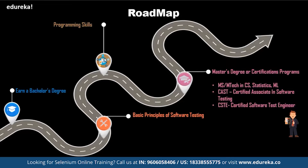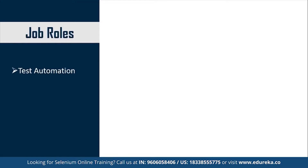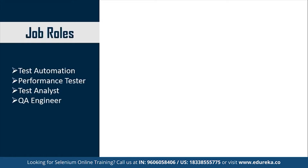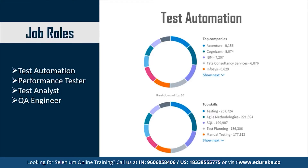Now let's move ahead and look at the job roles for a Test Automation Engineer. Some of the most common job profiles include Test Automation, Performance Tester, Test Analyst and QA Engineer. Looking at statistics provided by LinkedIn on these top profiles, the top companies in Test Automation include big names such as Accenture, Cognizant, IBM, TCS and Infosys.